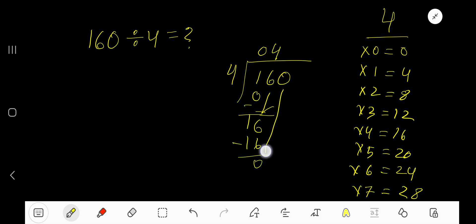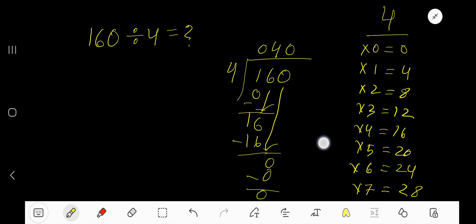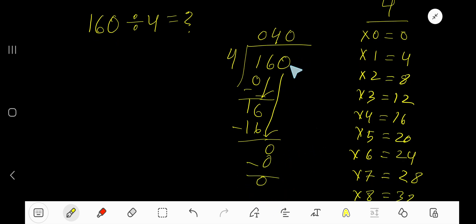Bring down 0. 4 goes into 0 how many times? 0 times. 0 times 4 is 0. Subtract to get 0. As our remainder is 0 and there is no digit in the dividend, we are done. 40 is our answer.